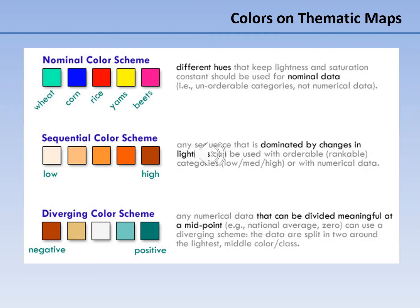A thematic map, more formally known as a choropleth map, is a type of map specifically designed to show a particular theme connected with a specific geographic area. These maps generally use graded color series to symbolize classes of information. To present nominal or qualitative data, which are unorderable and non-numerical, the color variation should not present a pattern and should be totally random. To present sequential data, like counts by certain characteristics, it is best to use shades of a single color. For diverging data, which oscillates around a certain standardized value, it is best to use two diverging colors with a neutral midrange shade.